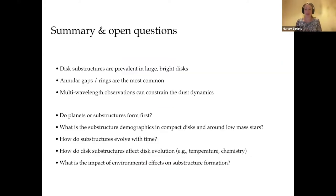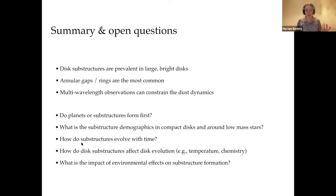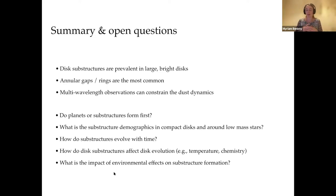In summary, we find substructures in all bright disks. Gaps and rings are the most common. Using a multi-wavelength approach, you can constrain the dust dynamics. Open questions include: do planets form first or do substructures form first and help planet formation? What is the demographic of substructures in compact and low-mass disks, which dominate the stellar population? How do substructures evolve with time, and how do they affect disk evolution in general through gas temperature and chemistry? And what is the impact of environmental effects — multiplicity, irradiation, infall from the envelope — on the formation of substructures?